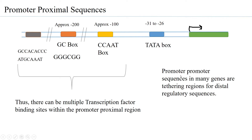Interestingly, promoter proximal sequences need not directly influence the binding of the transcription machinery or directly affect transcription activity. They might just be tethering regions for distal regulatory sequences — sequences present in another chromosome or perhaps two to five kilobases away in the same chromosome. Those distal regulatory sequences, with proteins bound to them, are able to tether to the promoter proximal sequences and help influence the transcription process.